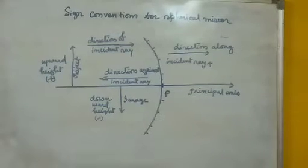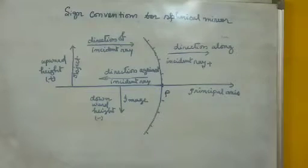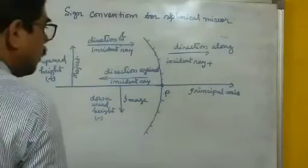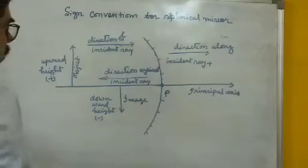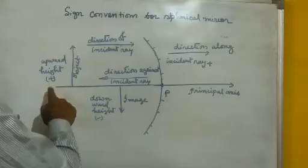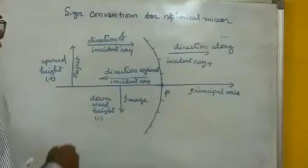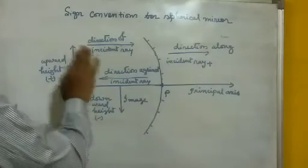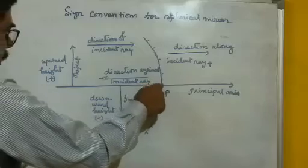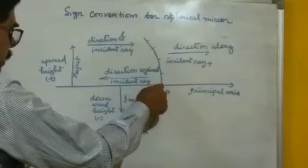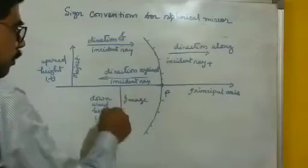Now the sign convention for spherical mirrors. For a concave mirror, the principal axis and the pole are the reference points. All the measurements are taken from the pole only.